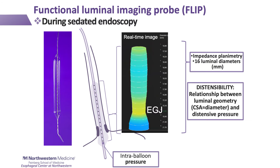To introduce the FLIP: FLIP is placed into the esophagus typically at the time of sedated endoscopy and utilizes impedance planometry technology to measure the luminal dimension of the balloon attached to the distal end of a catheter. Within the balloon is also a pressure sensor that provides evaluation of the dimension-pressure relationship — that is, distensibility.